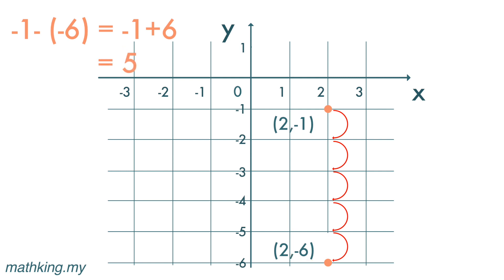So we can see that when we want to find the distance between two points that are on a horizontal or vertical line, we simply subtract the coordinates that are different and do nothing to the coordinates that are the same.